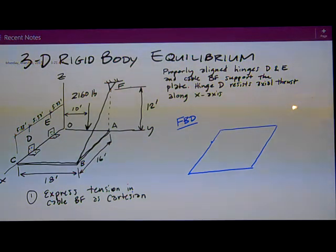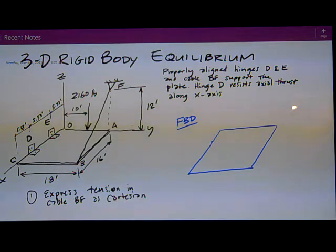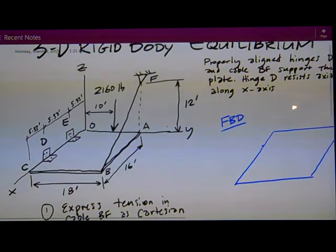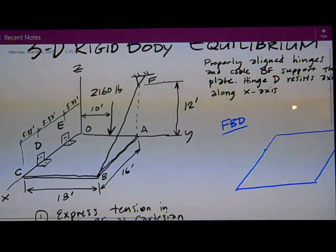We've got a 3D rigid body equilibrium problem here with a horizontal plate supported by two of these weird, properly aligned hinges at D and E. Properly aligned means they resist no moment, which is kind of a weird thing for a hinge, in any direction.